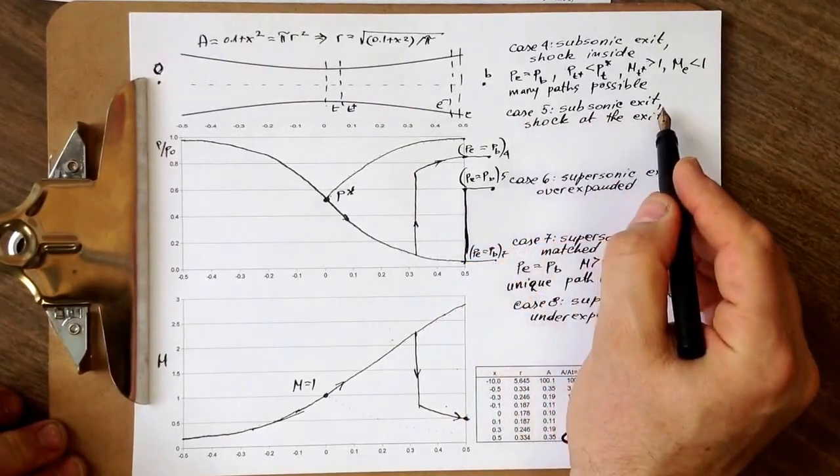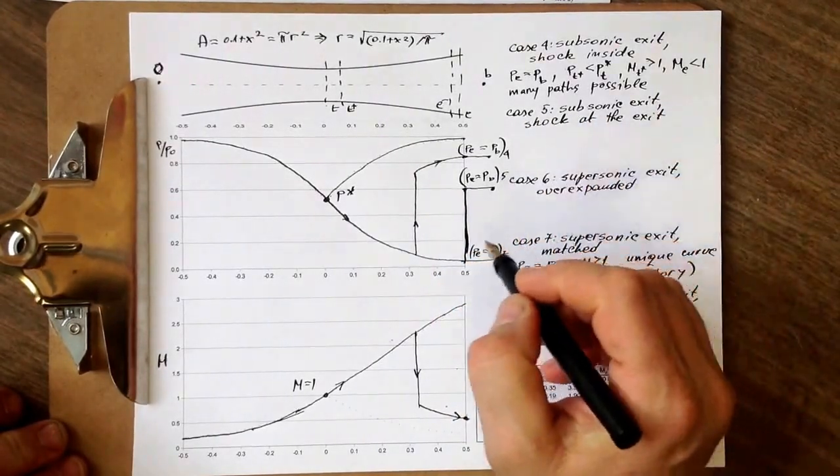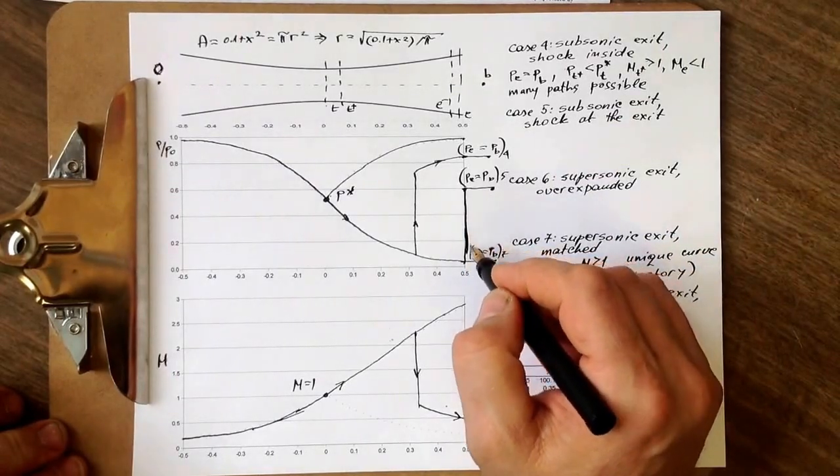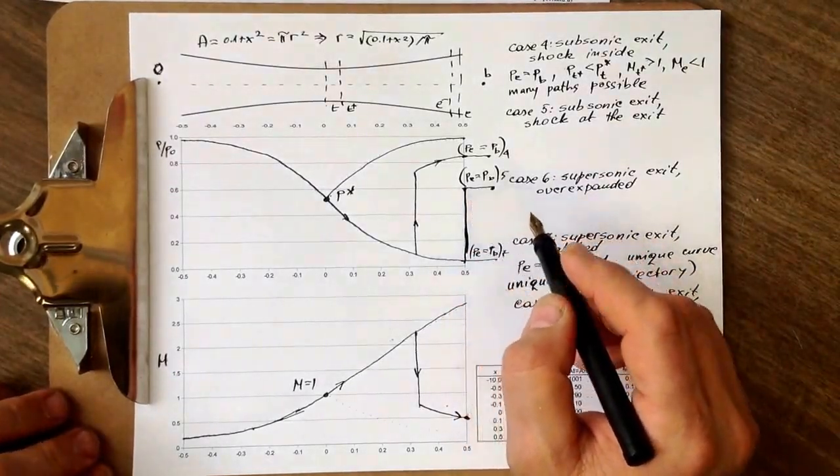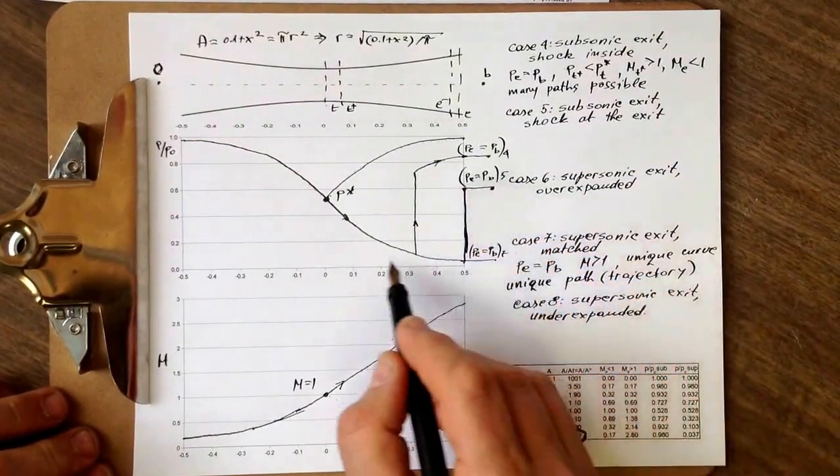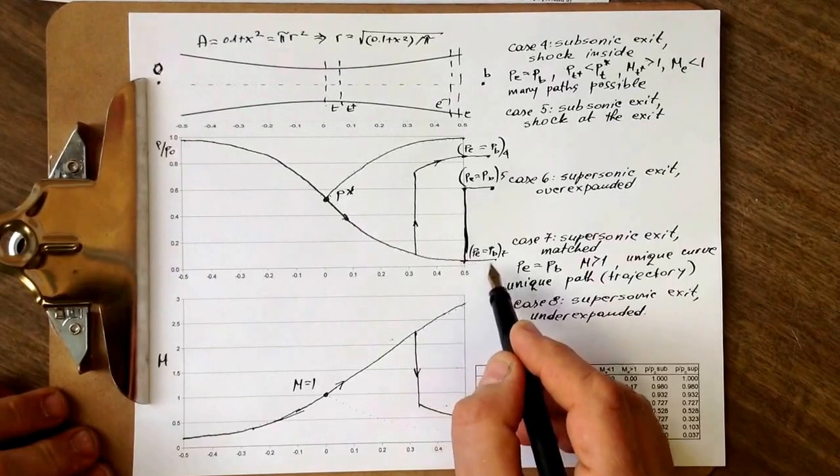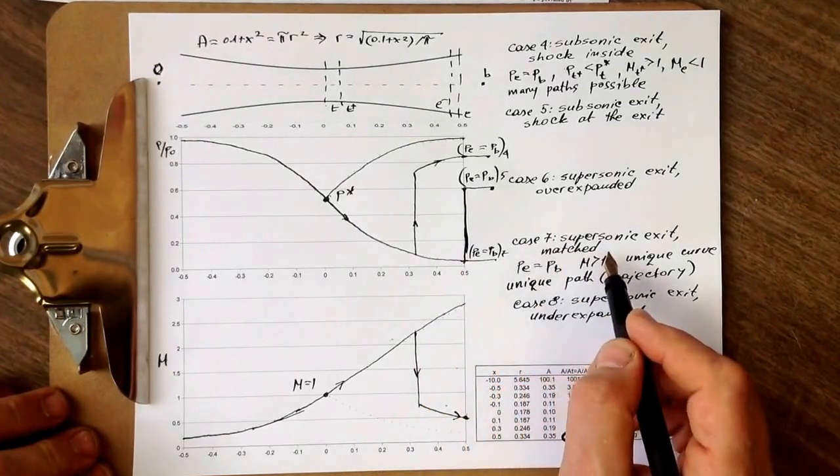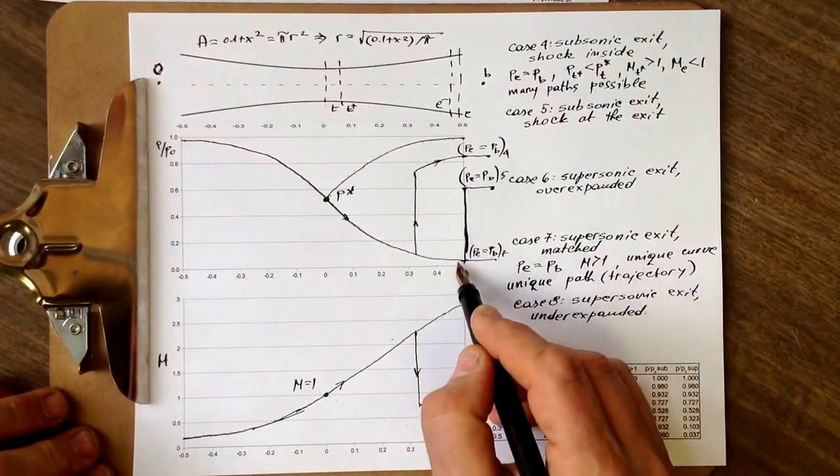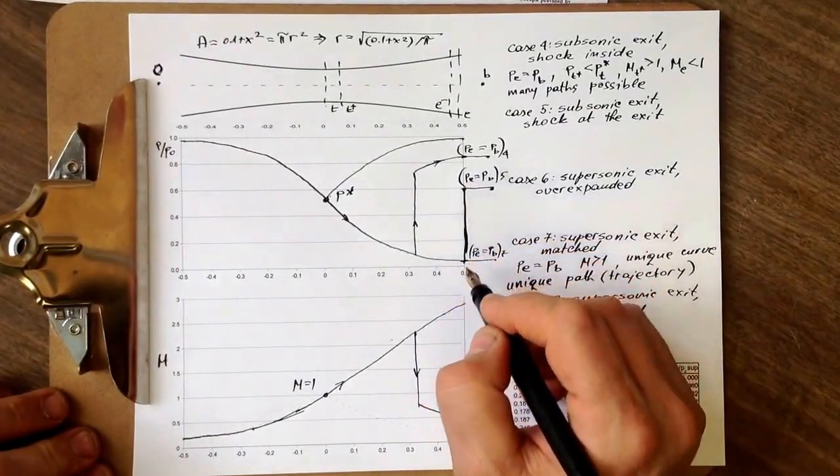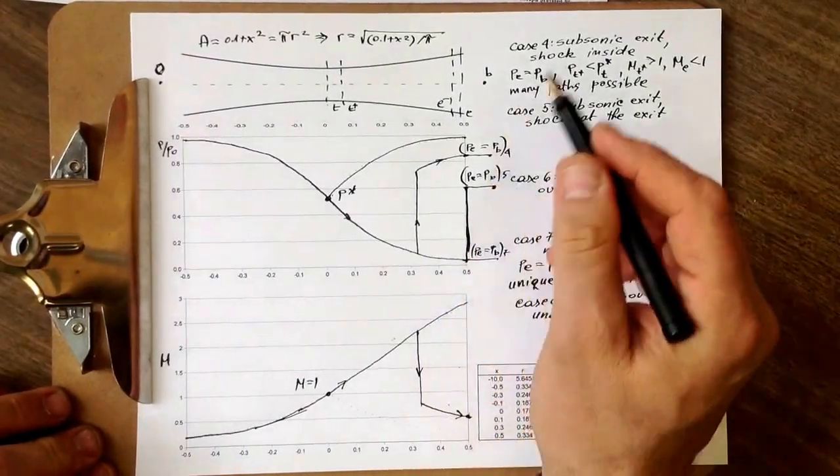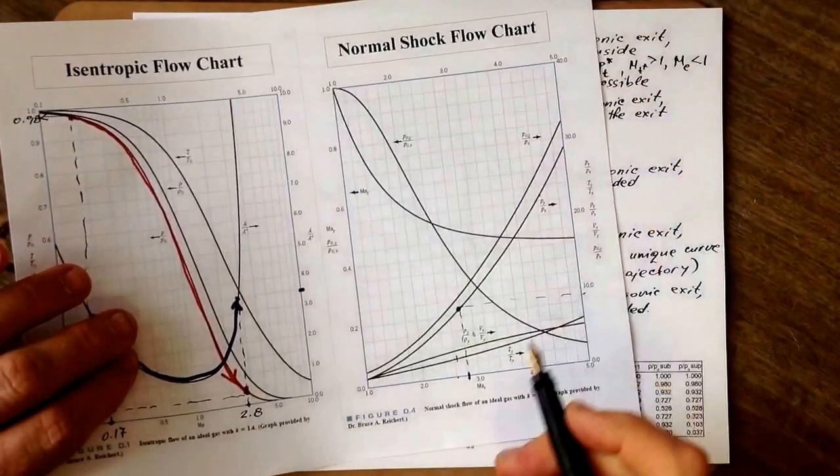That's subsonic exit, shock at the exit. In this case, we can actually fairly nicely do the calculation of all the values, because we know the Mach number right before the shock is the same as Mach number would be for matched nozzle. It cannot be any different before the shock. And then, for that Mach number, we can use basically this table.